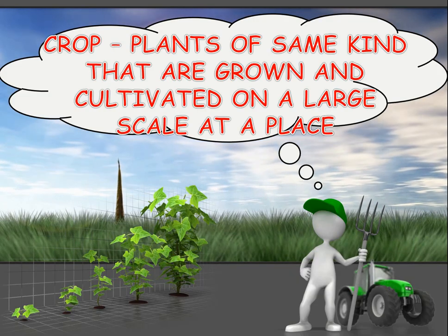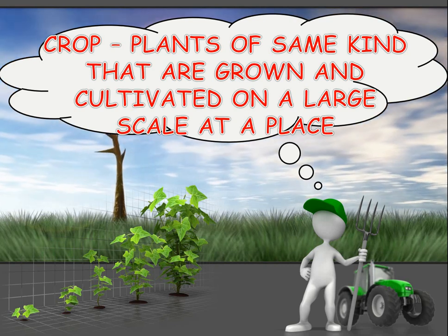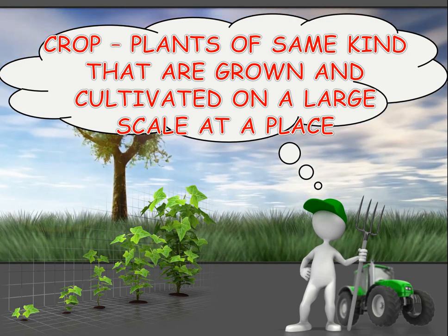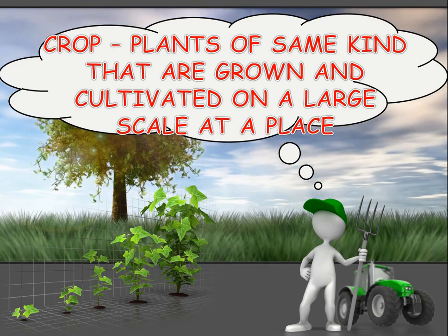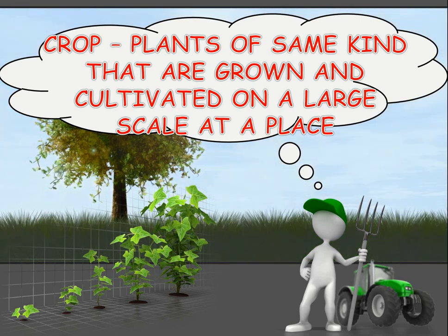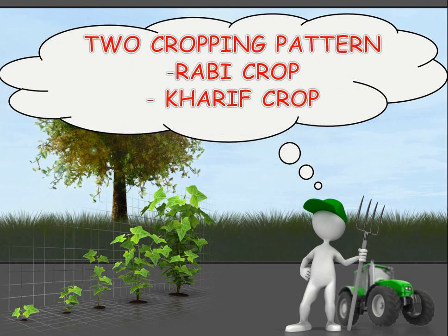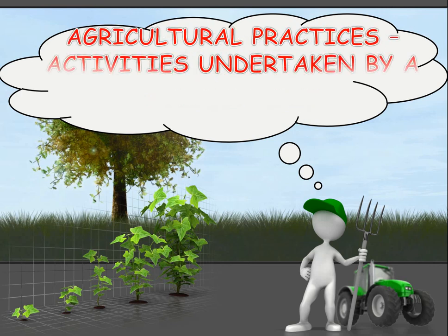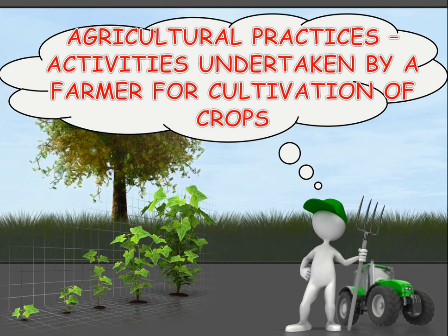Let's see what we have done in the last class. Crop: plants of the same kind that are grown and cultivated on a large scale at a place. There are two cropping patterns: Rabi crop and Kharif crop. Agricultural practices are activities undertaken by a farmer for cultivation of crops.